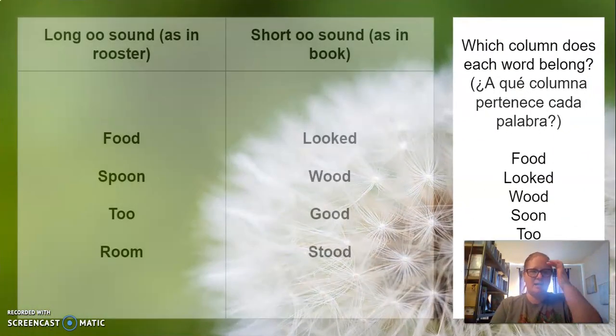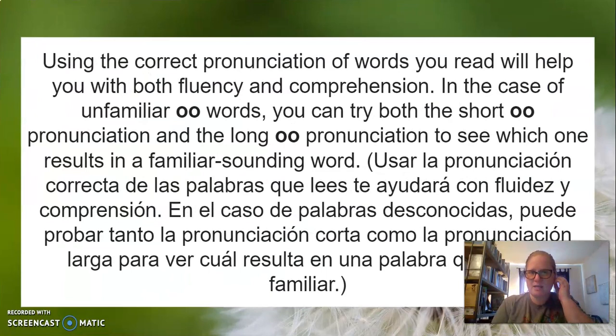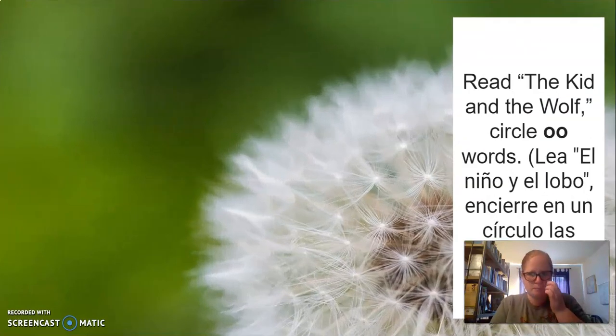I will be able to create sentences using words that have a double O vowel pair. Now, we went over this last week. We went over each word. Long O sounds that sound like rooster, food, spoon, two, room. And then we have the short double O sounds like book, looked, would, good, stood. It's got that uh instead of that oo sound. So using the correct pronunciation of words you read will help you with both fluency and comprehension because you'll be able to understand the words as you're reading them. In the case of unfamiliar double O words, you could try both the short uh pronunciation and the long oo pronunciation to see which one results in a familiar sounding word.